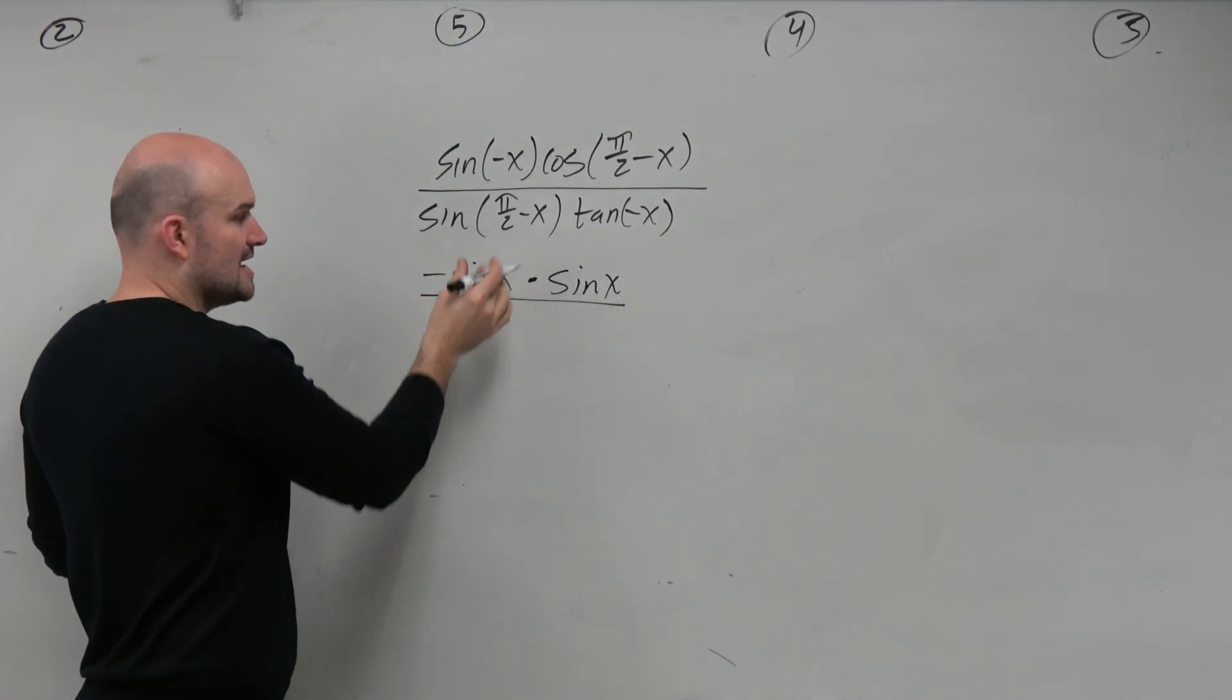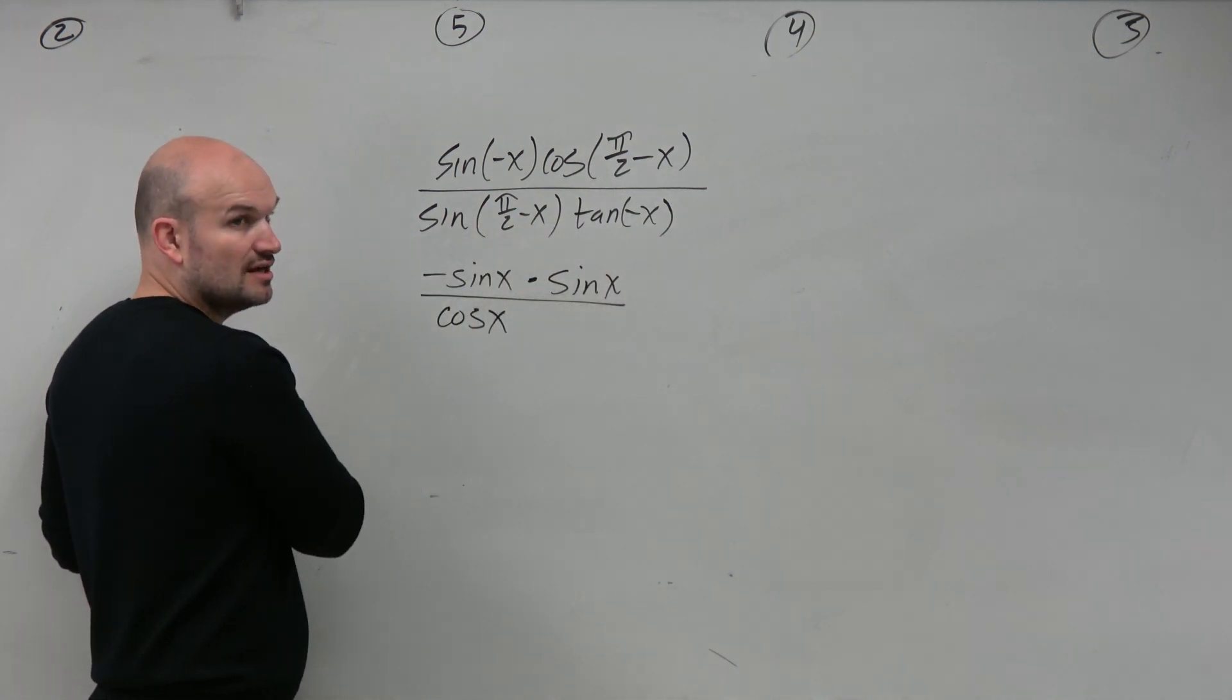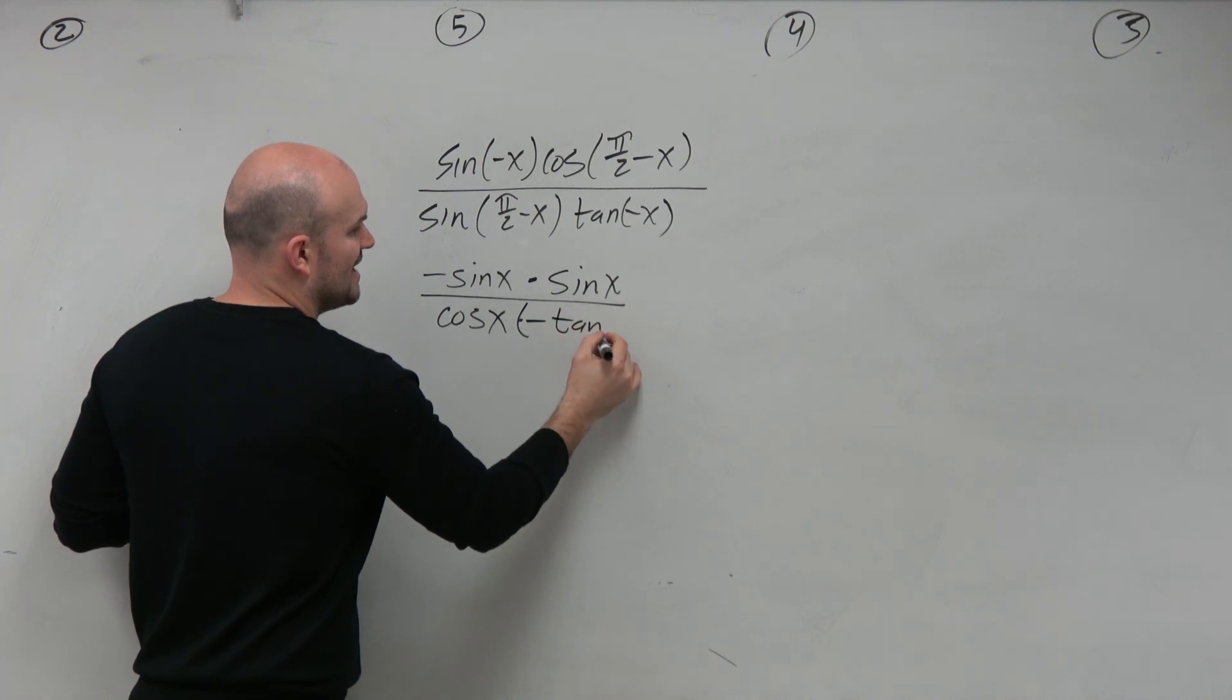Sine of pi over 2 minus x is now the cosine of x. And the tangent of negative x is going to be negative tangent of x.